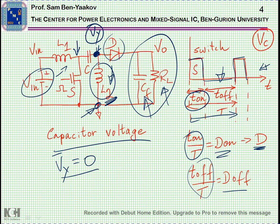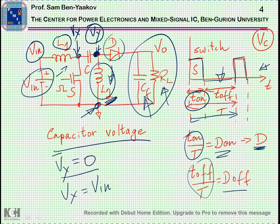Now let's move to the other node, Vx. If I look at L1 — Vy is connected to one side, and I'm looking at the other side — for the average voltage to be zero, Vx must equal Vy. So very quickly we have found that the capacitor at steady state will have a voltage on it which is Vin, with polarity plus on one side and minus on the other. This can then be used to go on and analyze the circuit.